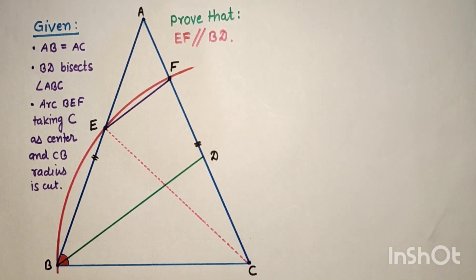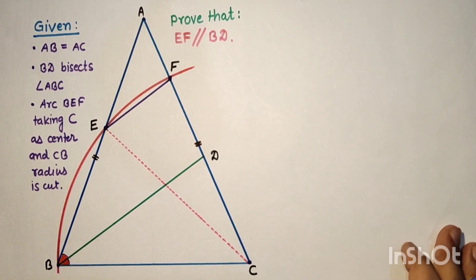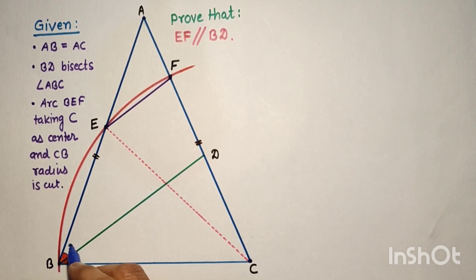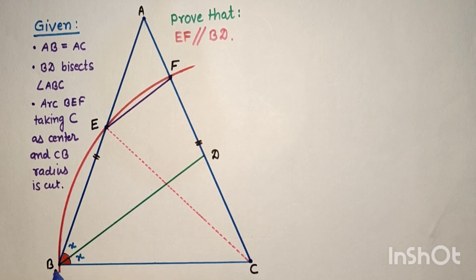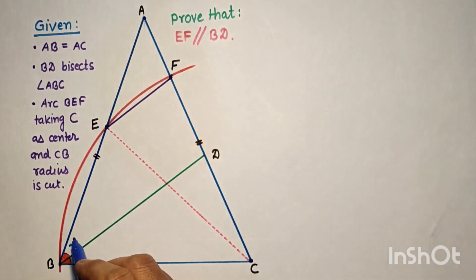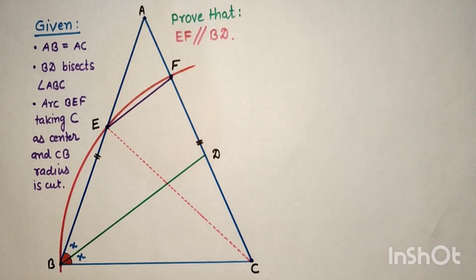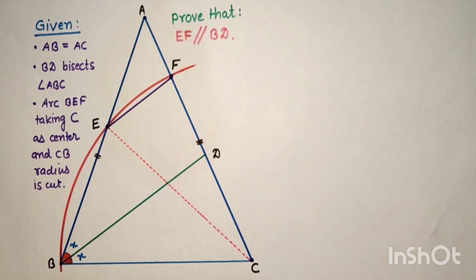We have three to four methods to solve this problem. We'll do it normally by taking this as X. This will also be X because BD bisects this angle. Whatever is this angle will be this angle because AB equals AC, so angles opposite to equal sides will be equal, so this will also be 2X.